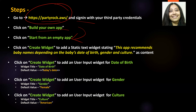The next thing we are going to do is add a widget for static text. This widget is going to say that this app recommends baby names depending on the baby's date of birth, gender, and culture. And if we want, we can also add that it provides a detailed meaning of the selected baby name. So let's get started.